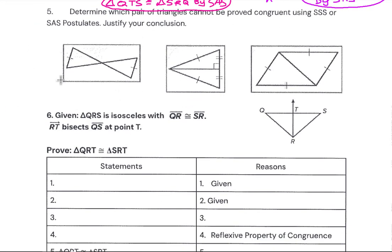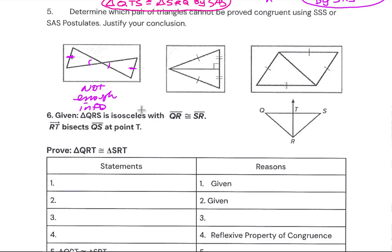Looking at number five — which pair cannot be proved congruent using Side-Side-Side or Side-Angle-Side? We've got two vertical angles and two sides, but there's no information about the other sides, so there's not enough information for that one.